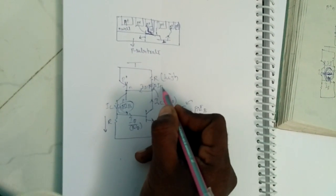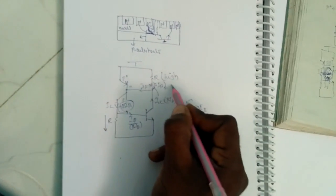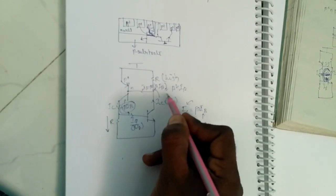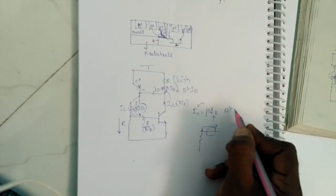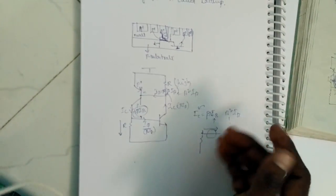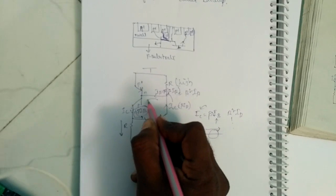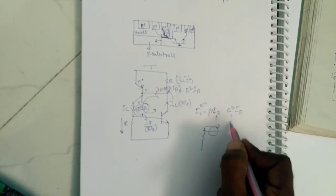This beta into IB will go here, and again this is multiplication of beta into IB, which is nothing but beta squared IB. The current gradually increases from beta into IB to beta squared into IB for first level. If it traverses again like this path, it is beta cube into IB.